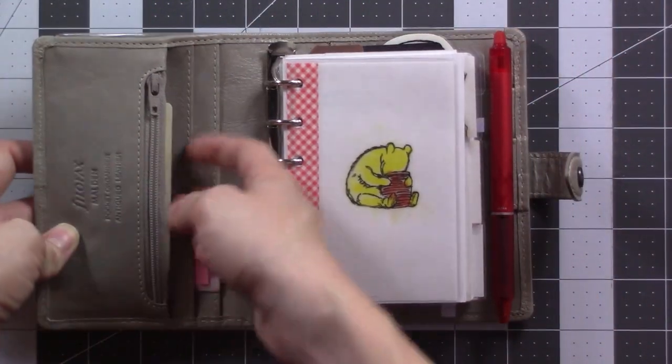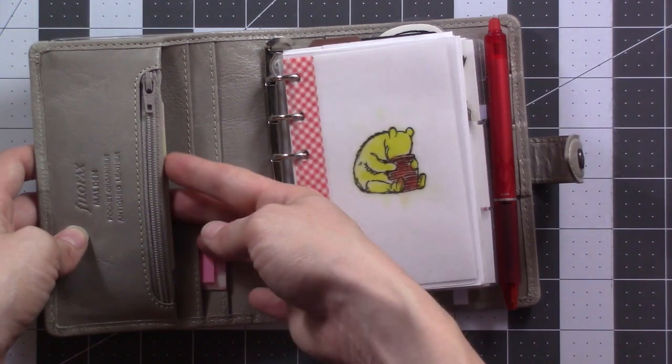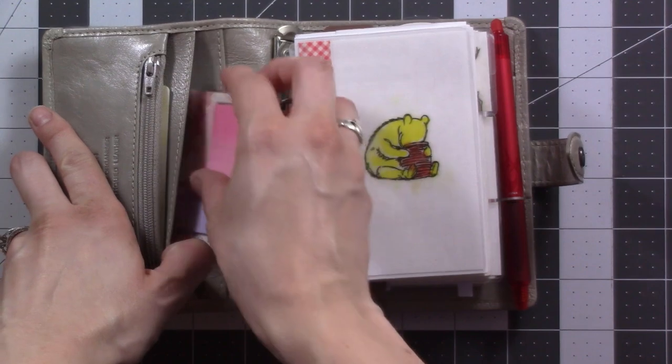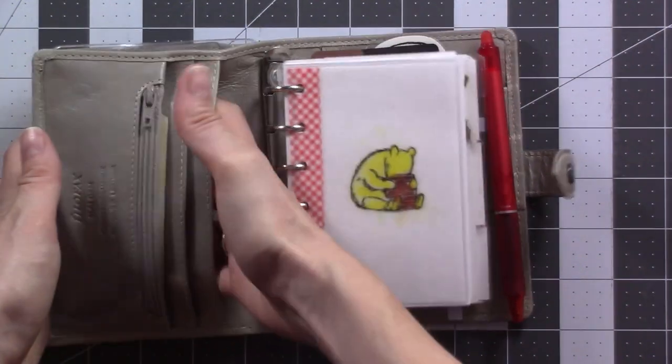So there's change in the front, driver's license and a credit card in the first pocket here. The second pocket currently just has my little plastic tabs from Daiso. Then the third pocket is empty.